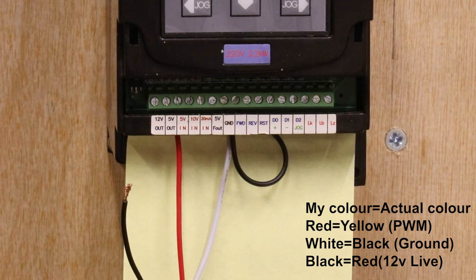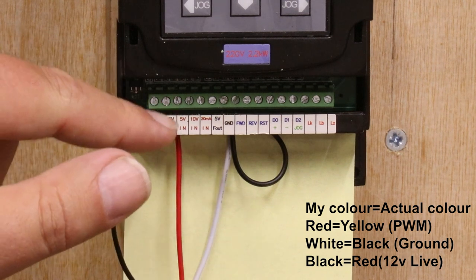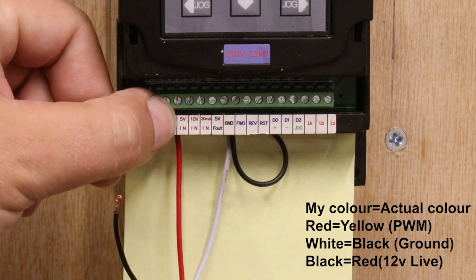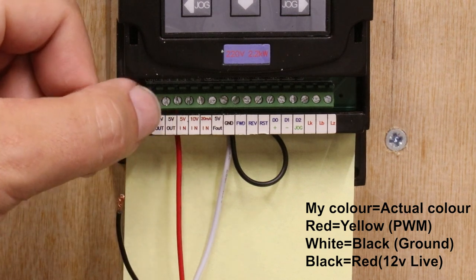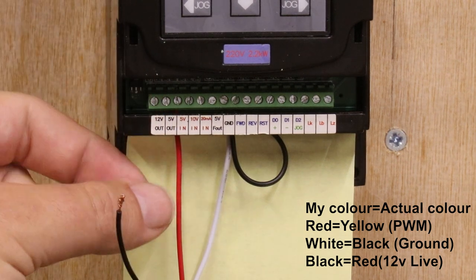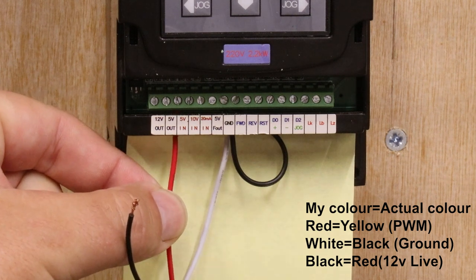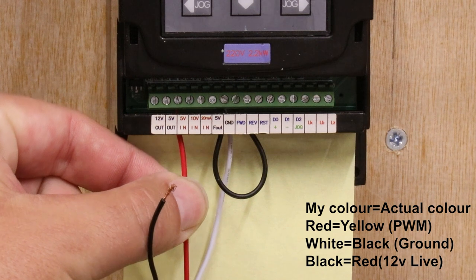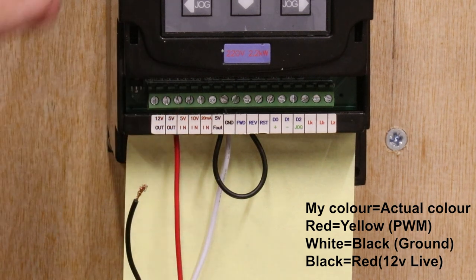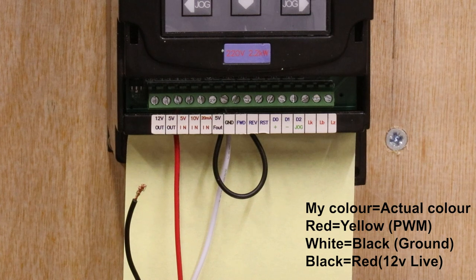So the first thing that I did was connect the PWM wire into the 5 volt in. This is about the incoming signal that the VFD needs to detect, and ultimately that is the signal from the PWM cable. And obviously because we're using the 5 volt input for this, we would use the 5 volt input on the settings that I was talking about earlier.